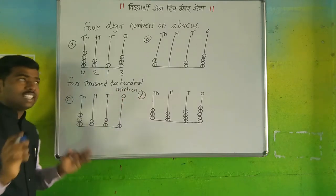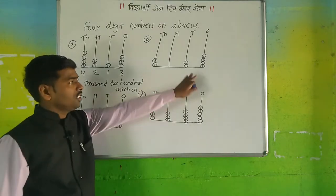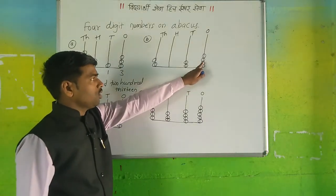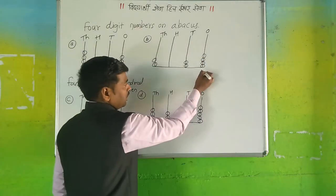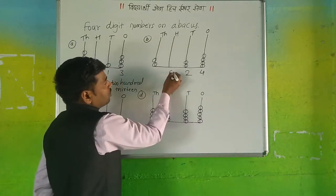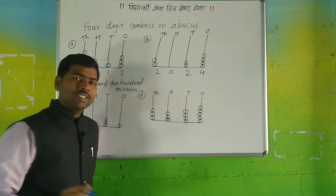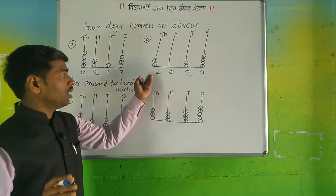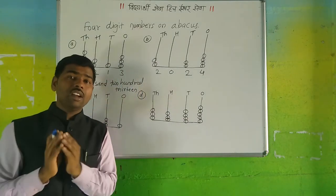Now the second example. How do you write this? On the ones place there are one, two, three, four beads. Then two. Here is nothing, which means zero. And here is two. Can anybody write or guess what this number is? This is two thousand and twenty-four.